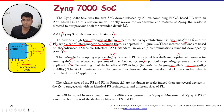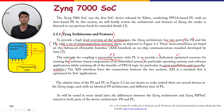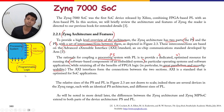The relative size of PS and PL in the diagrams is not drawn to scale. There are several devices in the Zynq range, each broadly having the same PS, but with different levels of PL. You choose the appropriate device based on your application requirements.